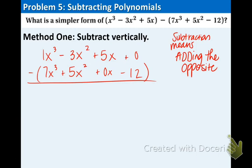Adding the opposite means plus and then make that a minus, make that a minus, make that a minus, and make this a plus. So, we're going to have 1 plus a negative 7 that is a negative 6x to the third, negative 3 plus negative 5 is negative 8x squared, 5 plus or minus 0 that's positive 5x, and lastly 0 plus 12 is 12.